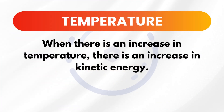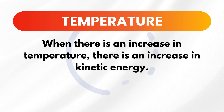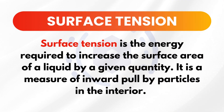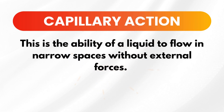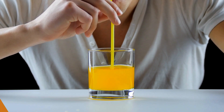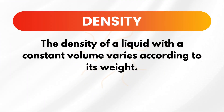Next, we have temperature. As you increase the temperature of a liquid, the kinetic energy of its particles increases, making it easier for the liquid to flow. That's why syrup becomes runnier when heated. Next is surface tension — the energy required to increase the surface area of a liquid. Water has high surface tension, which is why small insects can walk on it. Adding soap reduces water's surface tension, allowing it to spread out and clean surfaces more effectively. Next is capillary action — the ability of a liquid to flow in narrow spaces without external forces. Think of how water rises in a thin straw when placed in a glass. And last, we have density. Like solids, liquids have density. Oil, for example, floats on water because it is less dense.